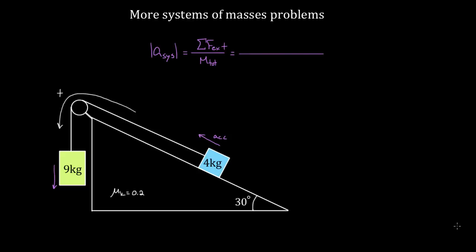What forces make this go? The force of gravity on this nine kilogram mass is driving this system — this is the force which makes the whole system move. If I were to just let go of these masses, they'd start accelerating because of this force of gravity, so that's gonna be nine kilograms times 9.8 meters per second squared, and that's gonna be positive because it's making this system go.